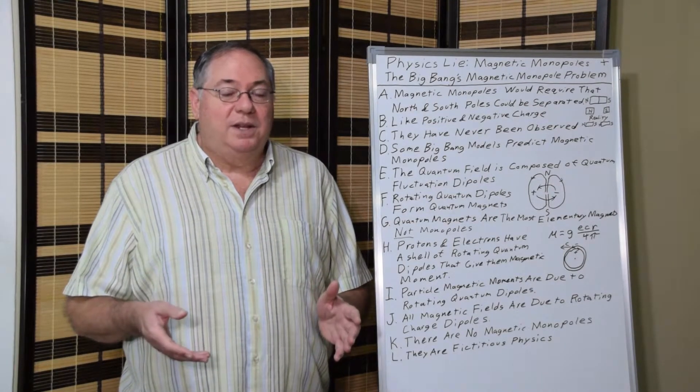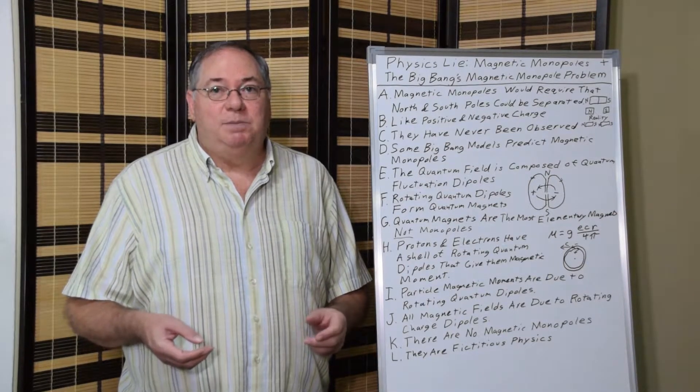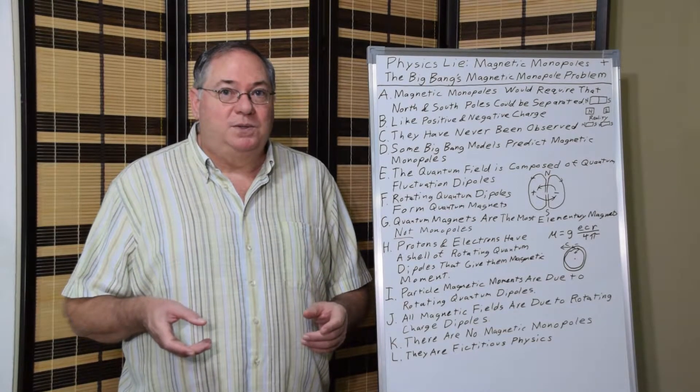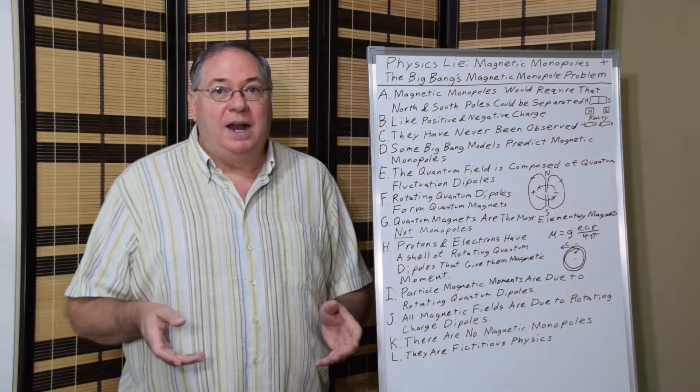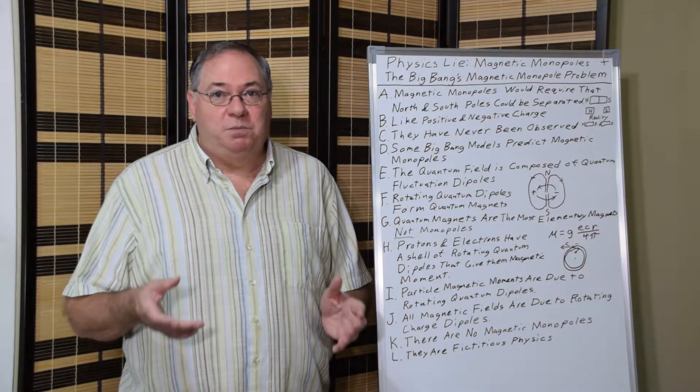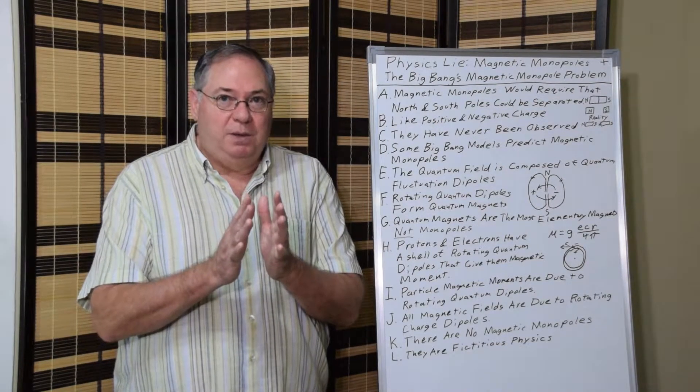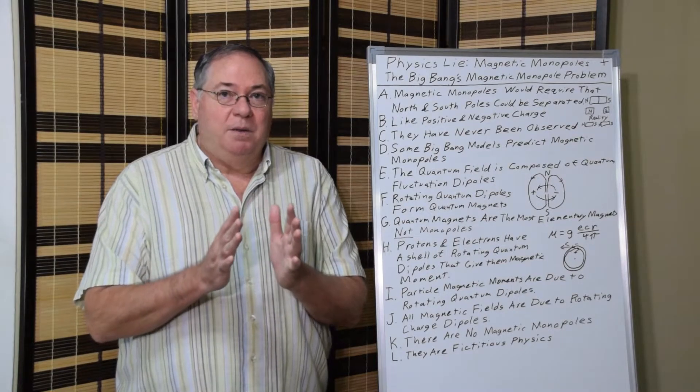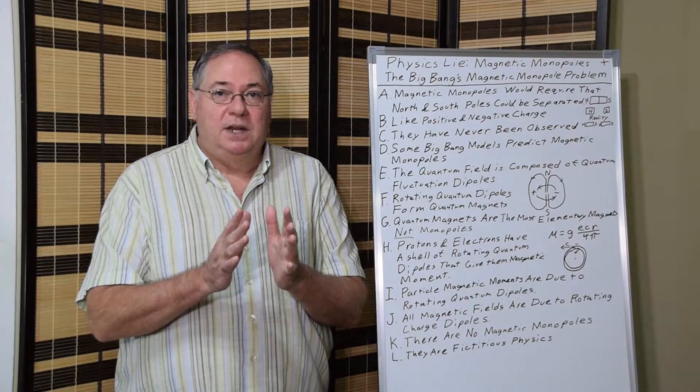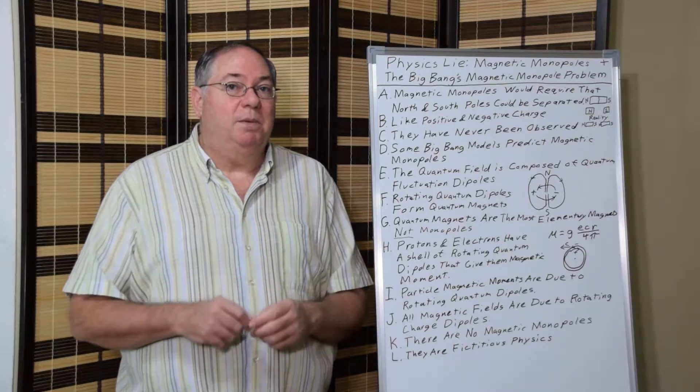And the reason we know that they're dipoles is because of the Casimir effect. The Casimir effect is due to electric charge dipoles in the quantum field interacting by way of van der Waals forces, which cause pressure. And in particular, in the two-plate examples, it can cause two plates to be pushed together, because it excludes quantum fluctuations between the two plates, causing there to be greater pressure pushing the plates together than pushing them apart.